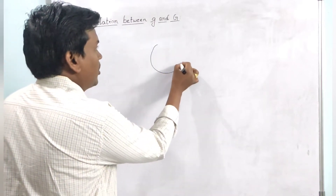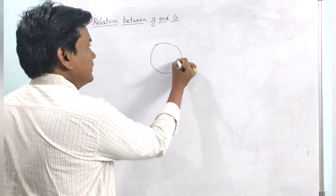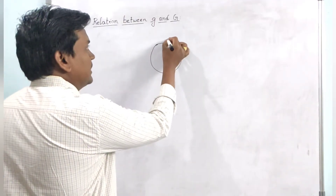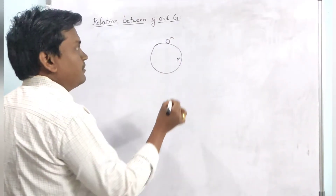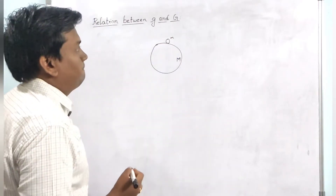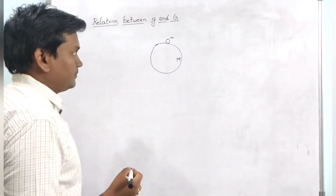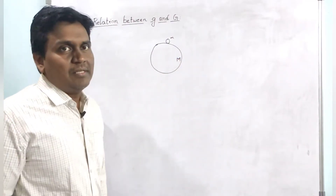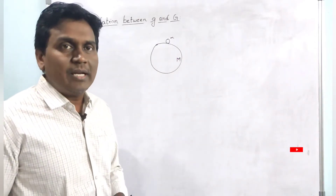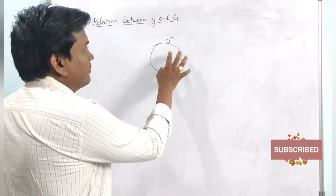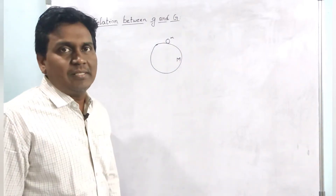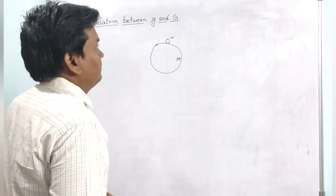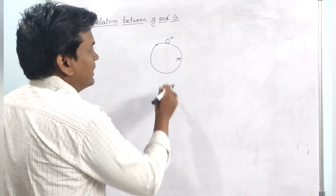Consider a body of mass capital M. On the surface of this capital mass M, there is a mass small m. There will be some force of attraction between these two masses. As we have discussed in Newton's law of gravitation, both the masses will attract each other by virtue of their masses.